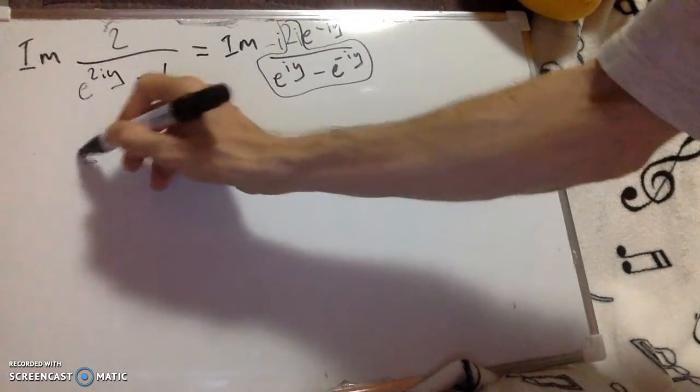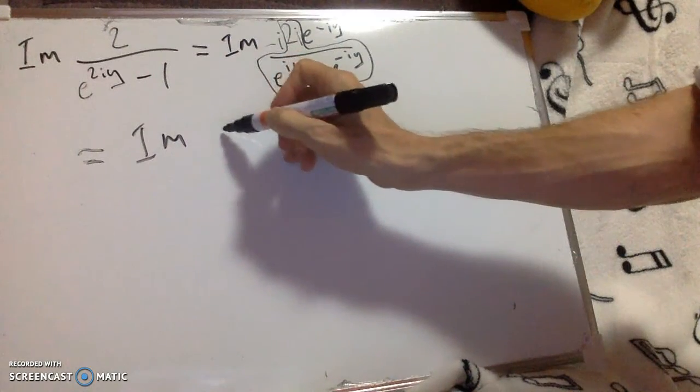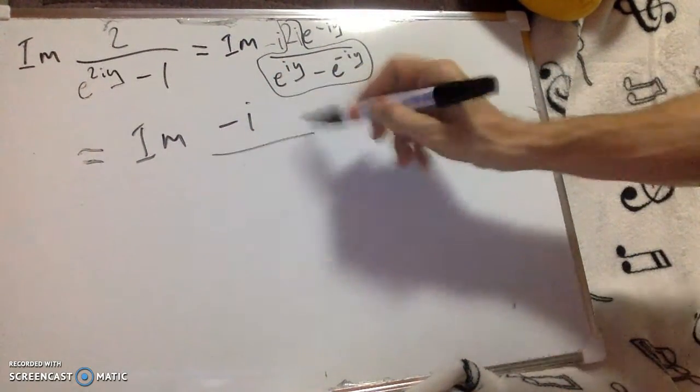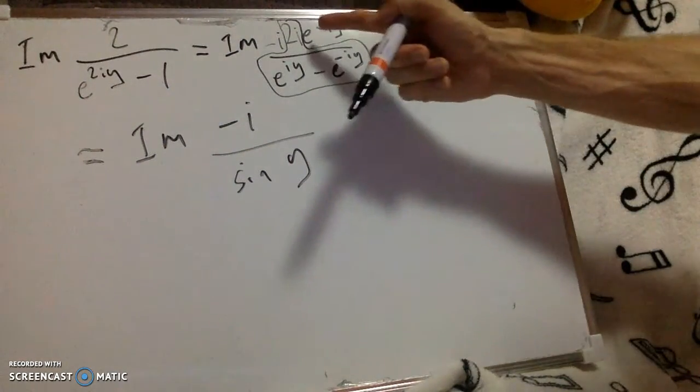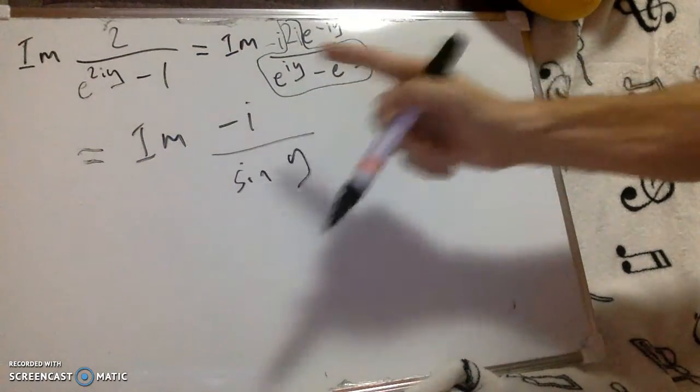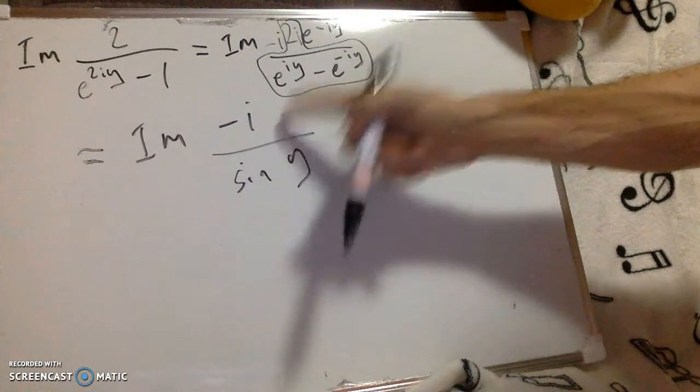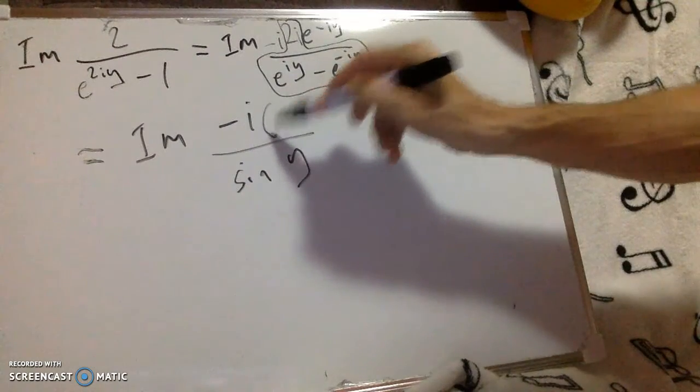So this gives me the imaginary part of minus i. Now I'm going to get sine y on the bottom. I finally want the imaginary part of this, so it's going to be simply minus i, and then I've got the... well, if I expand this.